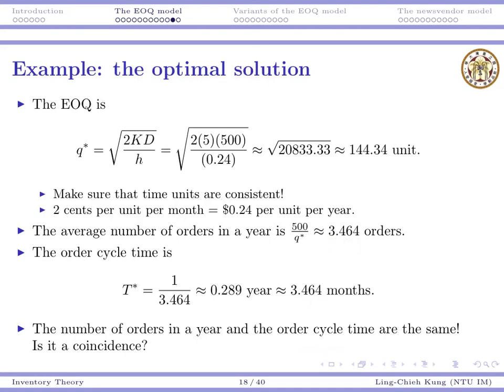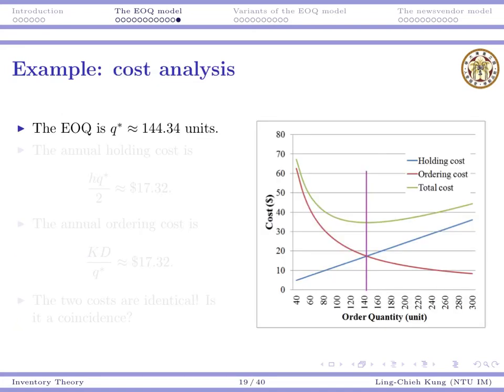The number of orders and the order cycle time are both 3.464—these two numbers are identical. Is this a coincidence or is it always true? It may be interesting to think about. Try plugging in different numbers and see what happens.